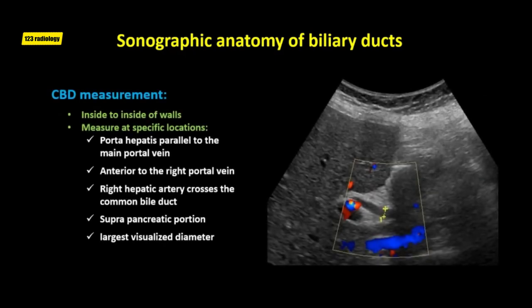The anteroposterior diameter of the common bile duct is measured in the long-axis view, from the inside of the near wall to the inside of the far wall. Measurements can be made at specific locations: at the porta hepatis parallel to the main portal vein, anterior to the right portal vein, at the point where the right hepatic artery crosses the common bile duct, at the suprapancreatic portion prior to the taper of the pancreatic head, or at the largest visualized diameter.